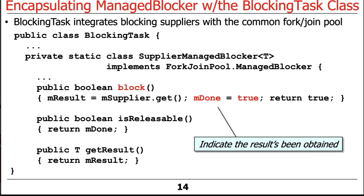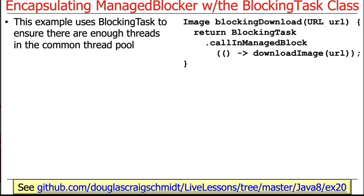The getResult method returns whatever came back from calling get on the supplier — just a way to get the results back. Here's an example also in the ex20 folder in my GitHub repository. It uses BlockingTask to ensure there are enough threads in the common ForkJoinPool to download an image.